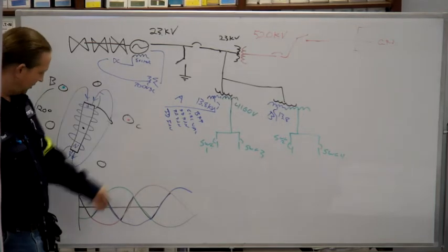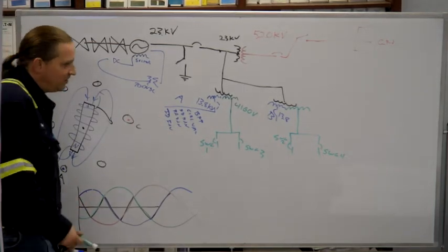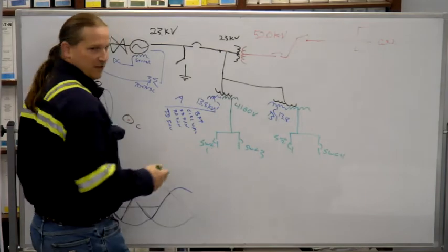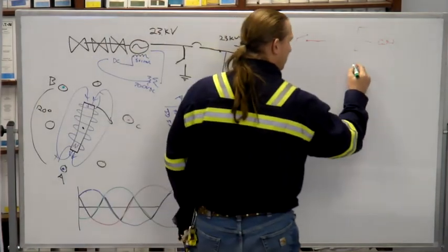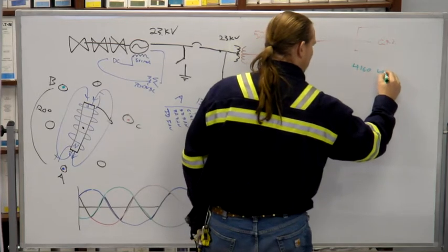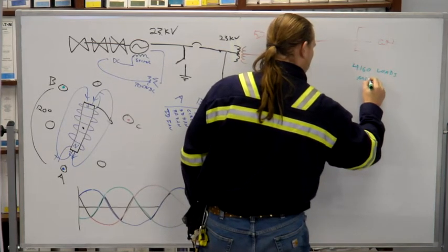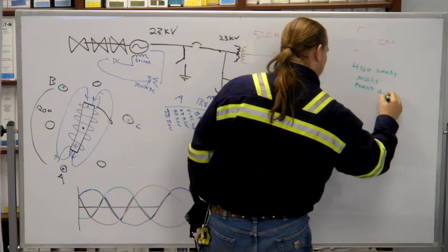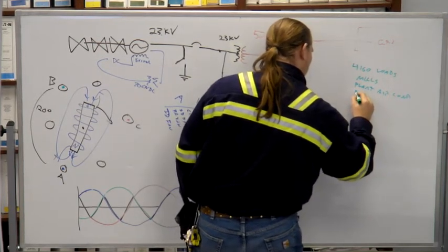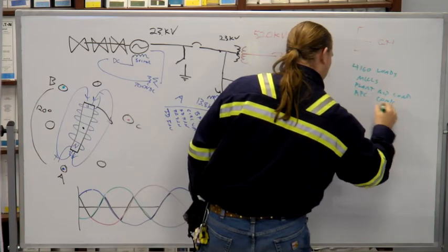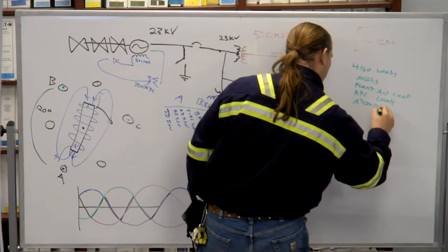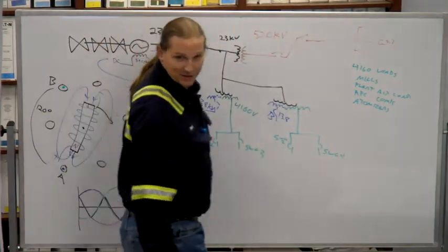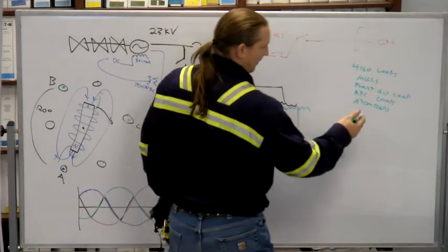We got 13.8 loads. What's powered directly from 4160? Pulverizers, circ water pulverizers. Mills, plant air compressor, APC compressors, boiler feed, condensate pumps.